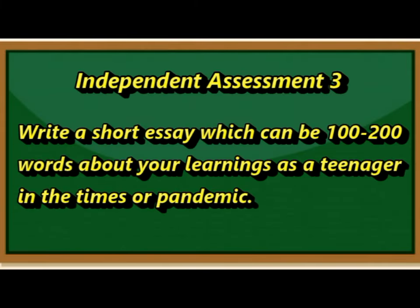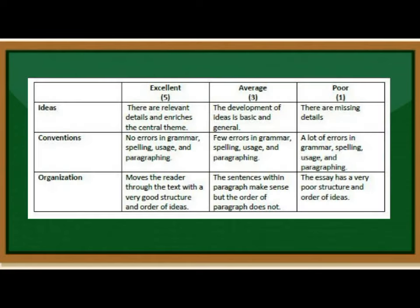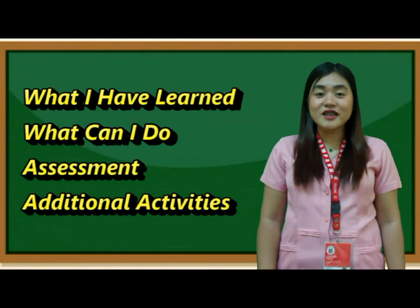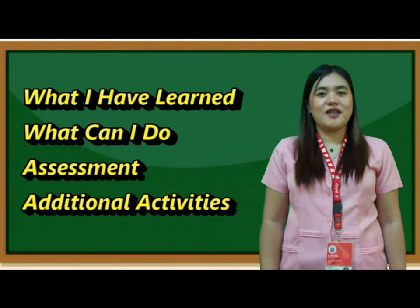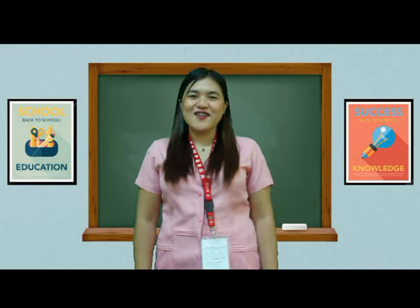Independent Assessment 3 — on your paper, write a short essay of 100 to 200 words about your learnings as a teenager during the pandemic. Consider the given rubric. You may continue to answer the remaining activities in your module. Hope you have learned a lot. Thank you and see you in our next video lesson.